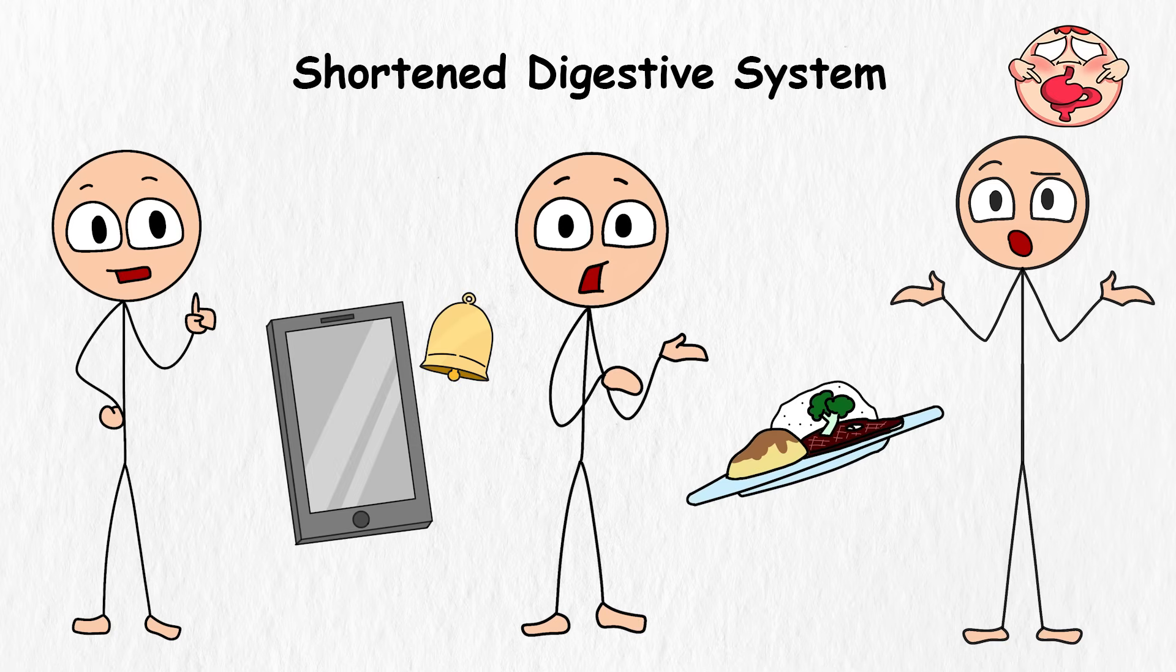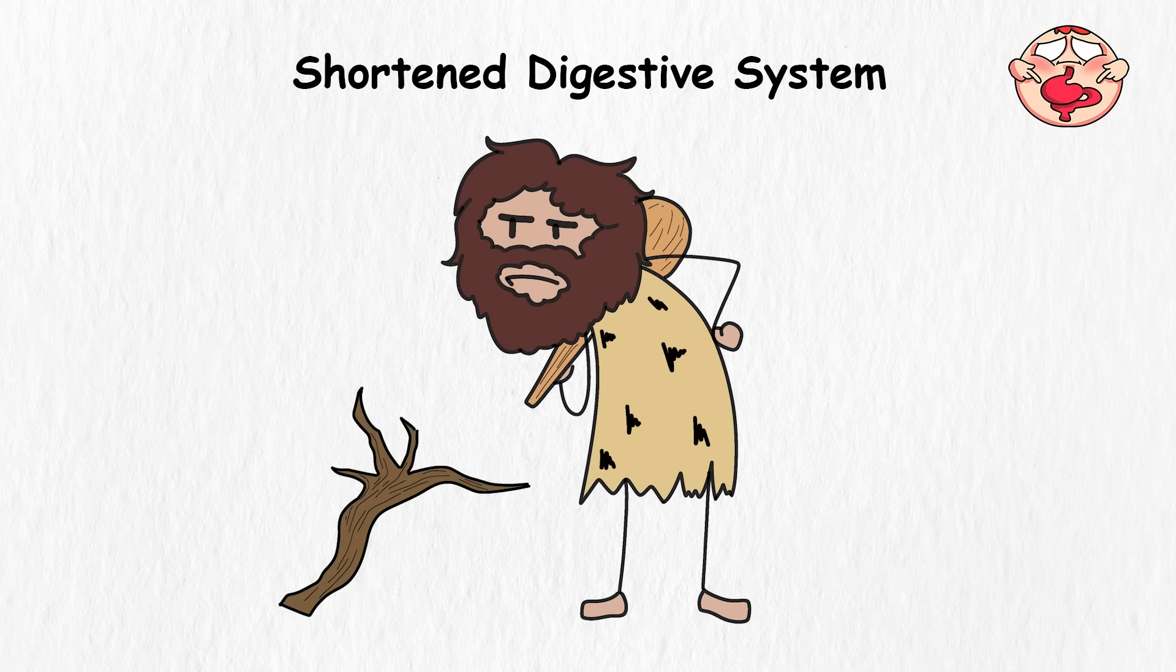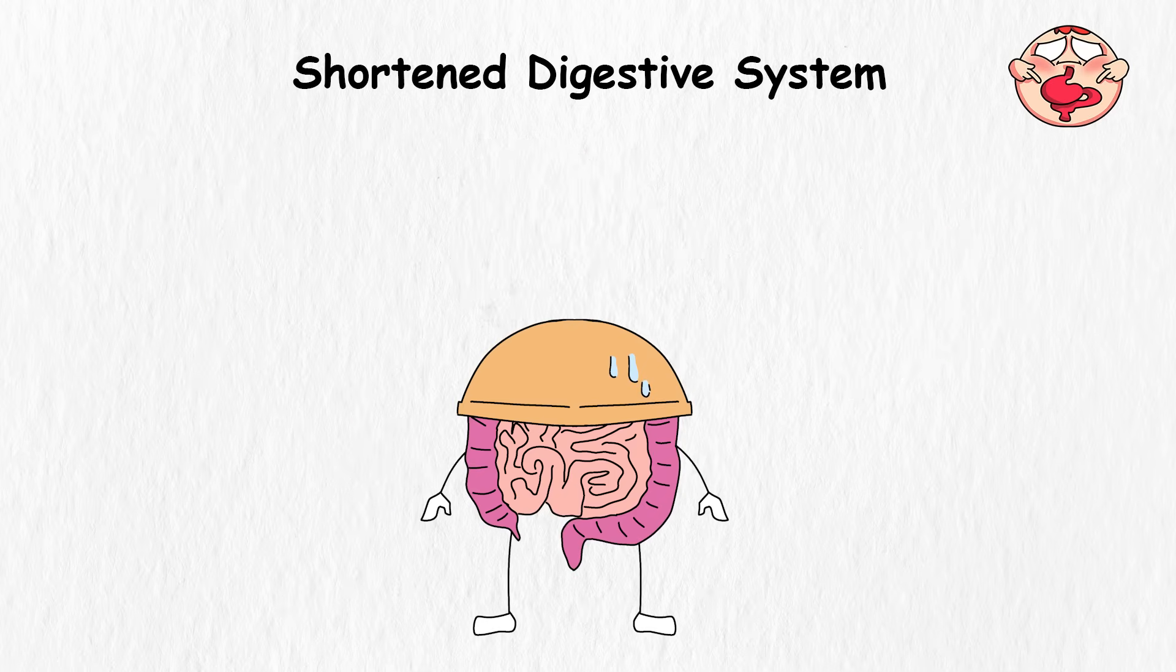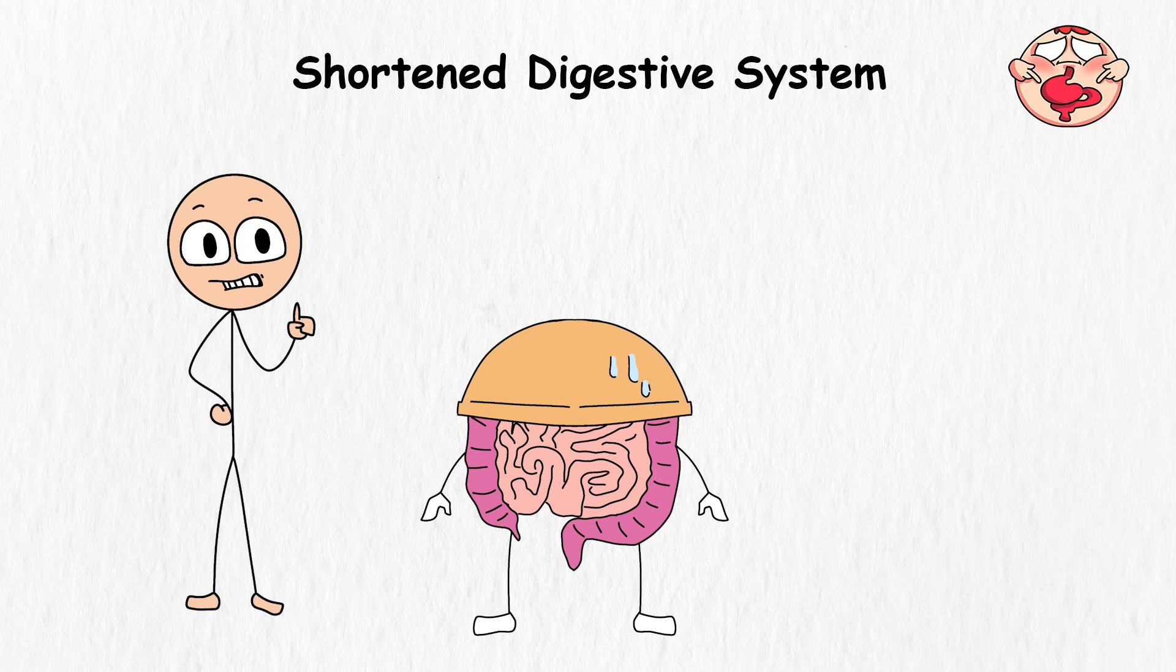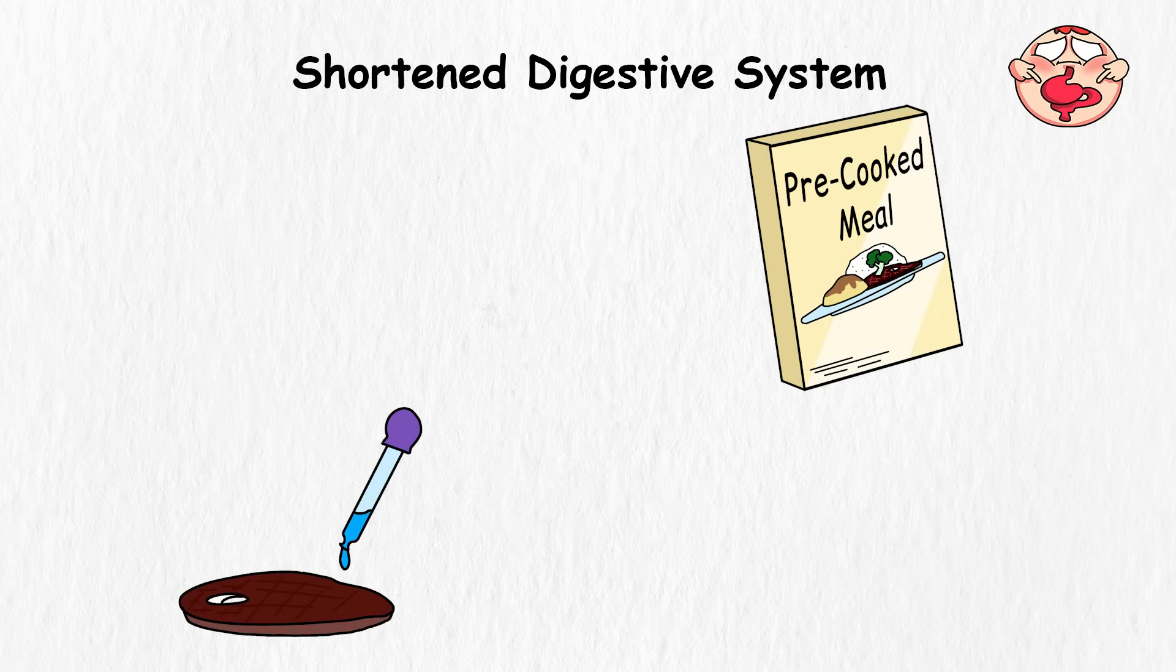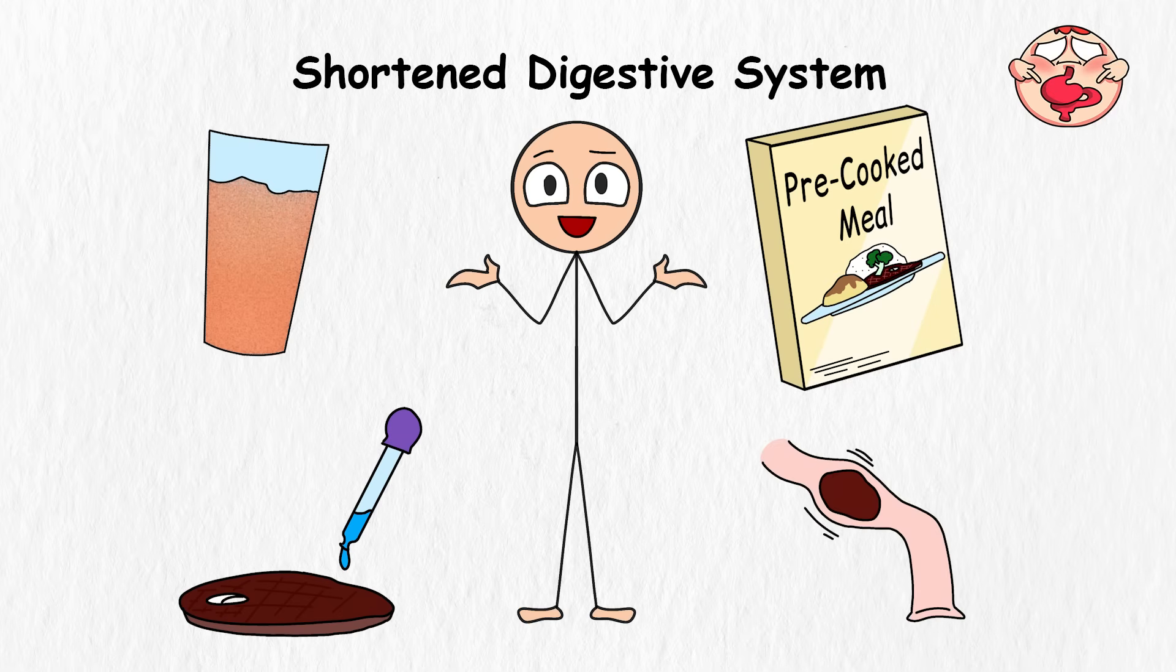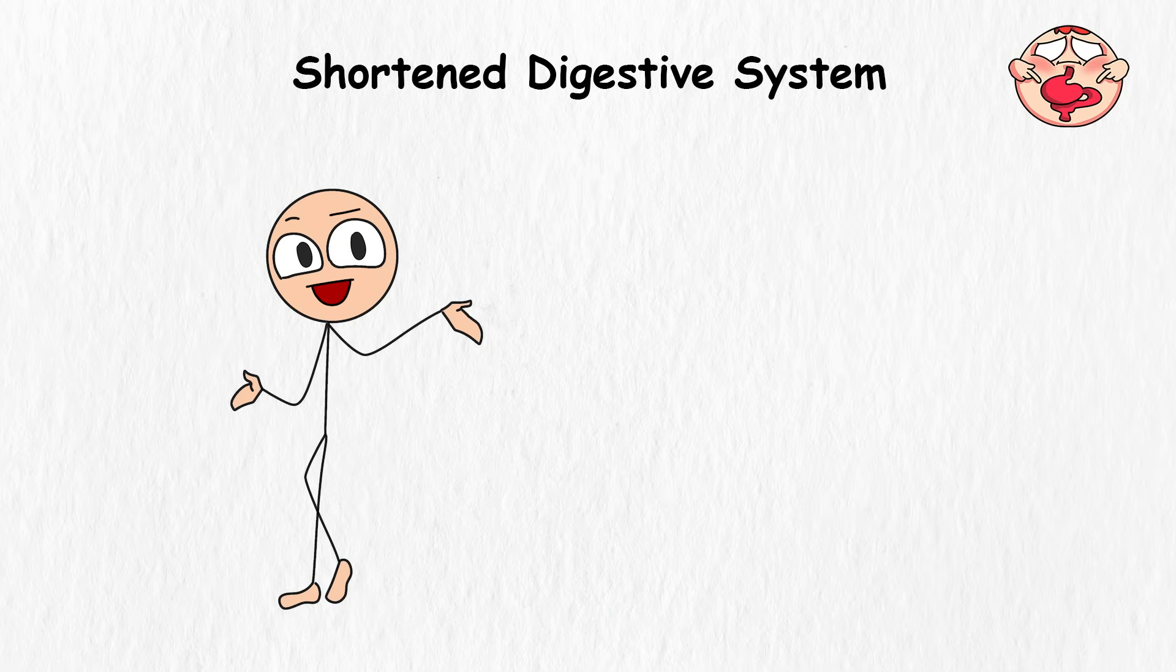For starters, our diets are changing faster than your phone updates. Thousands of years ago, our ancestors were gnawing on tough roots, raw meats, and fibrous plants, so their digestive systems were like factory lines and needed to put in the work to extract every possible nutrient from these hard-to-digest foods. However, today, most of us are munching on foods so processed they probably come with a resume. Pre-cooked meals, lab-grown meats, and nutrient shakes means there's less need for a long, winding digestive tract, and well, if there's one thing evolution loves, it is efficiency. So why keep putting the extra plumbing if it's no longer needed?